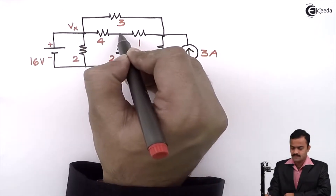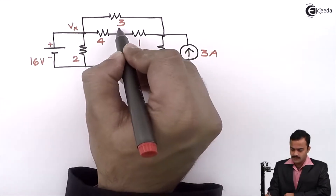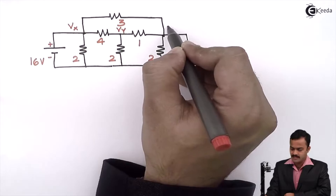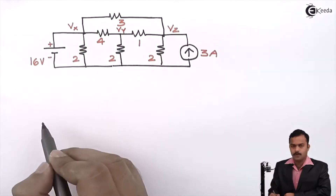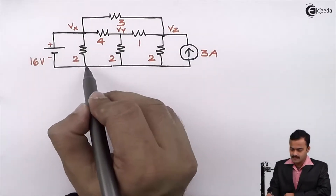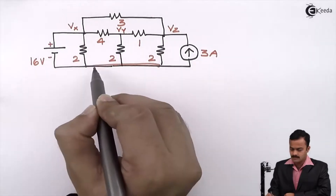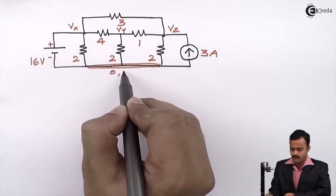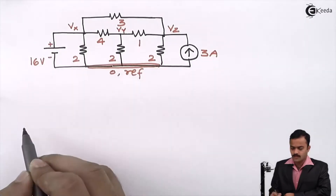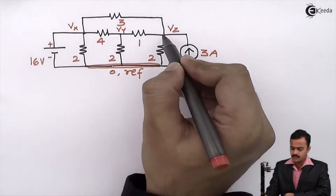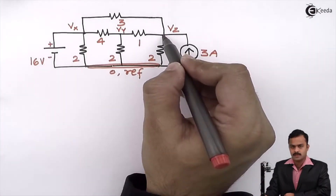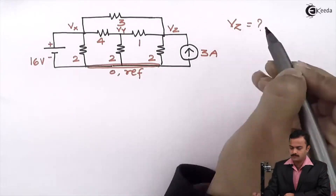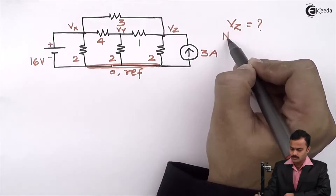Similarly, for this node it is Vy, and here I will consider Vz as the potential of node Z. This is the reference node, considered to have voltage zero. The objective is to get the potential of this node, so Vz is what we are supposed to find out using nodal analysis.